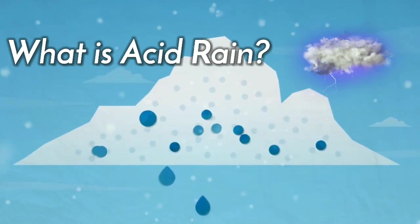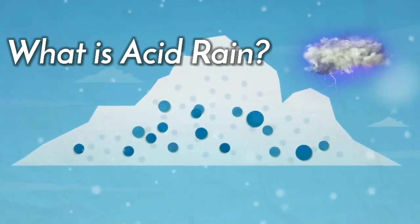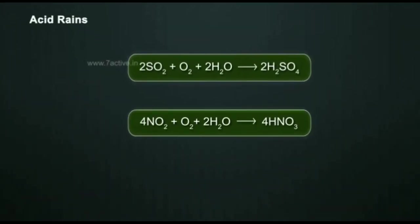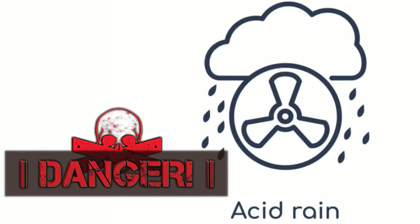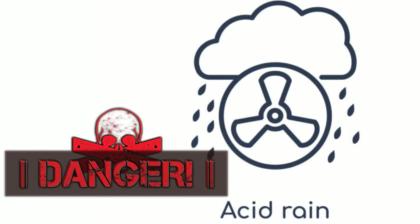What is acid rain? Acid rain describes any form of precipitation that contains high levels of nitric and sulfuric acids. Acid rain is a broad term that is often used to describe several forms of acid deposition.